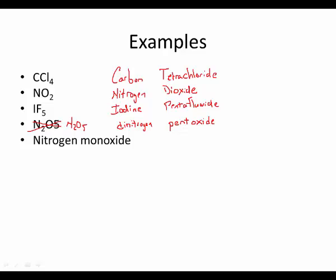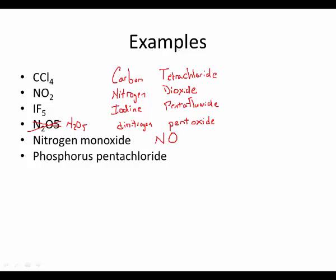Going backwards — converting names to formulas — is easy because there are no charges to deal with. I just look at the prefixes. For 'nitrogen monoxide': no prefix on nitrogen means one, and 'mono' means one oxygen, so the formula is NO. For 'phosphorus pentachloride': no mono on phosphorus so just P, and penta means five, chloride is Cl, so the formula is PCl5. It always strikes me that if it wasn't for the polyatomics, every compound would end with an -ide ending. It's those polyatomics that throw everything off.